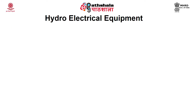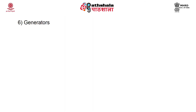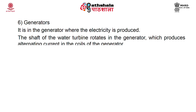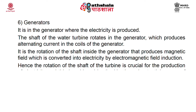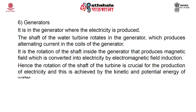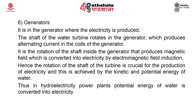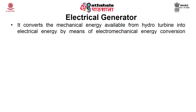The hydro-electrical equipment comprises the electrical generator, transformers, circuit breakers, and relays. The generator produces electricity: the turbine shaft rotates inside the generator, producing alternating current (AC) in the coil through electromagnetic induction. The rotation of the shaft creates a magnetic field, converting mechanical energy into electricity. The electrical generator converts mechanical energy from the hydro-turbine into electrical energy by means of an electromechanical energy conversion process.